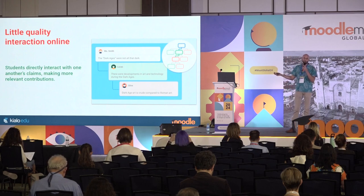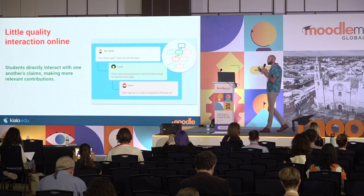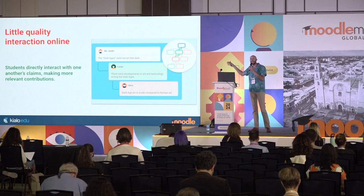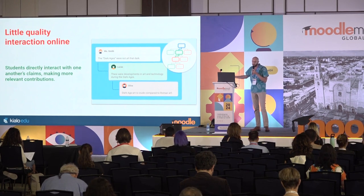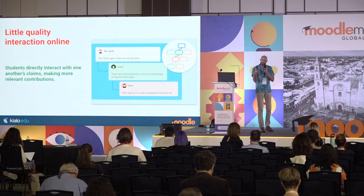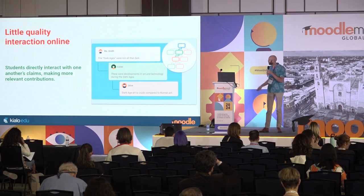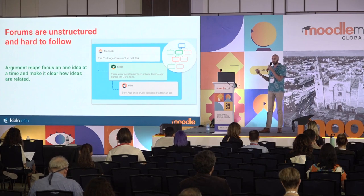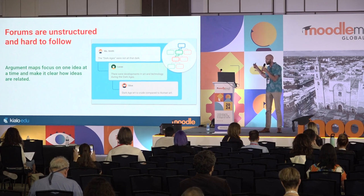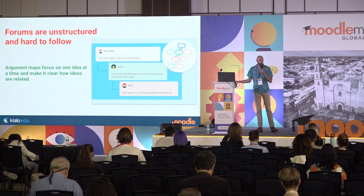Moving to online discussions, argument maps can help to alleviate that issue of little quality interaction, because the argument maps prompt students to break down their ideas one idea at a time and to respond directly to their peers' ideas. Just like when you get a comment on social media and you get that little hit of dopamine, when students get a direct response to one of their ideas, it can really help their engagement. And when it comes to making discussions easier to follow, that one-idea-at-a-time format is very useful, because you can see clearly and visually how all the ideas connect to one another, making the discussion much more approachable and therefore more engaging.